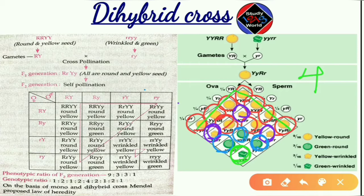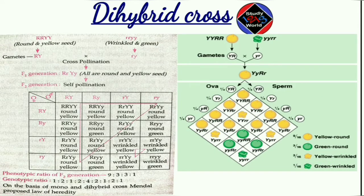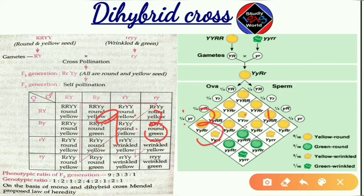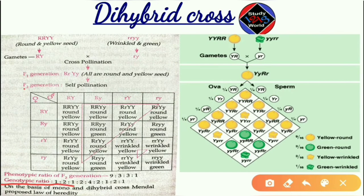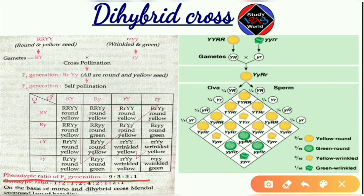We got four types of seeds: nine out of sixteen will be yellow and round, three out of sixteen will be green and round, three out of sixteen will be yellow and wrinkled, and one will be green and wrinkled. The phenotypic ratio is 9:3:3:1. In monohybrid cross the phenotypic ratio is 3:1, and we got four plants in monohybrid while here we have sixteen.